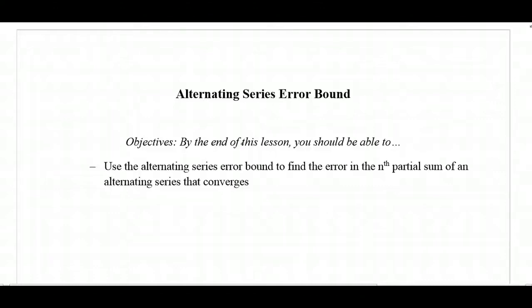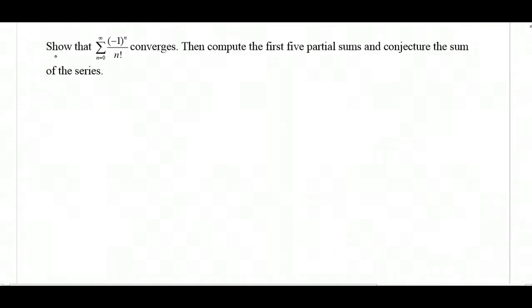Alternating series error bound. Let's begin by showing that the sum from n equals 0 to infinity of negative 1 to the n over n factorial converges.